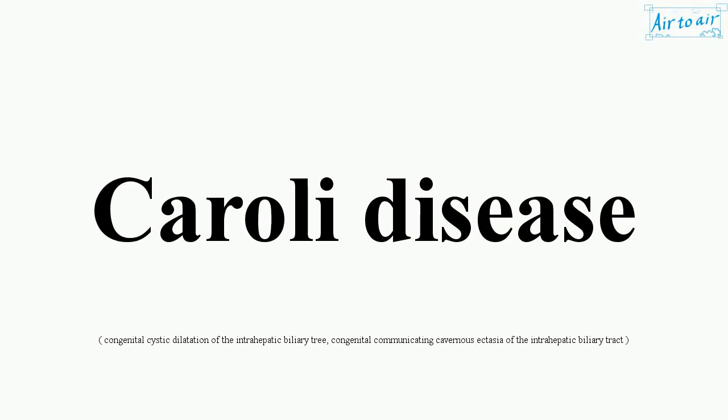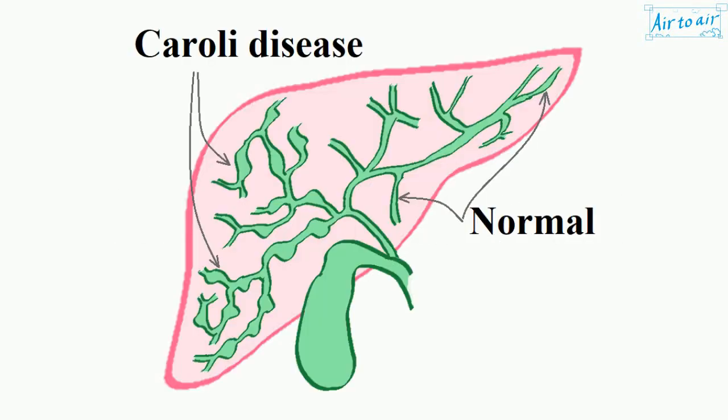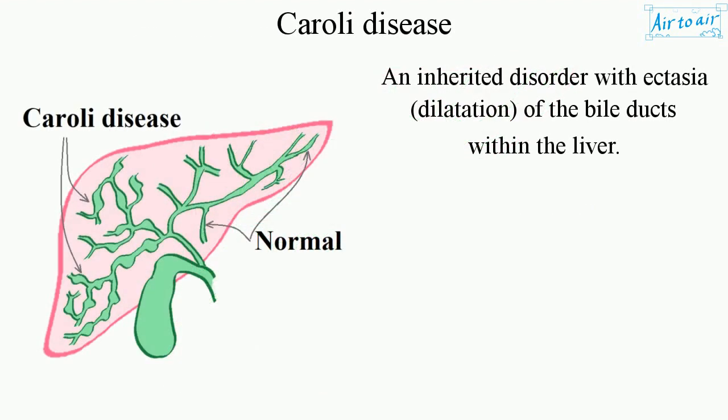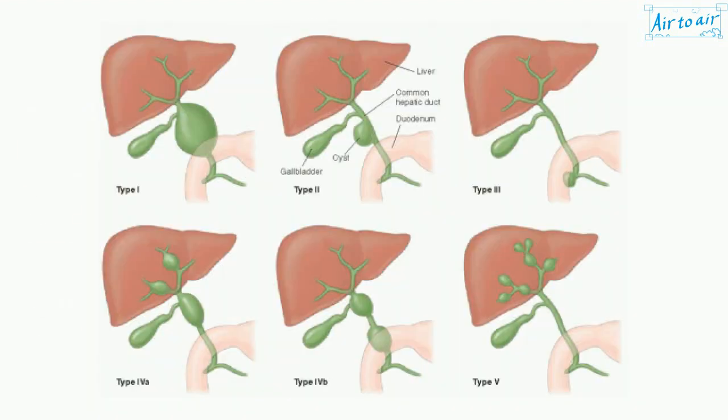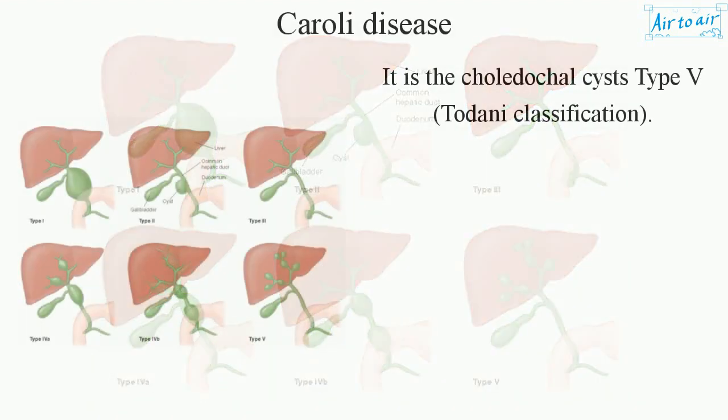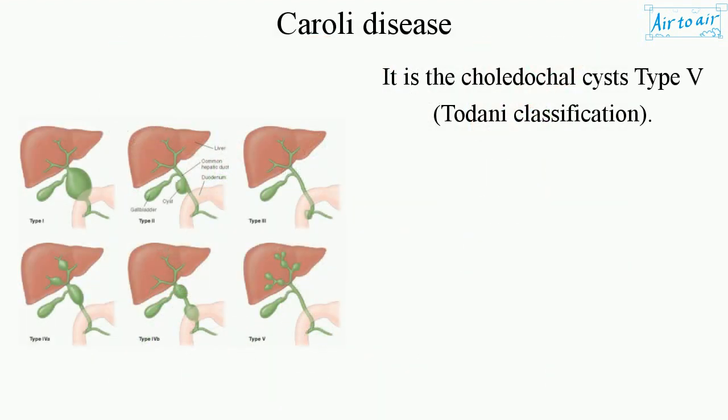Caroli disease is an inherited disorder with ectasia and dilatation of the bile ducts within the liver. It is the choledochal cysts type V in the Todani classification.